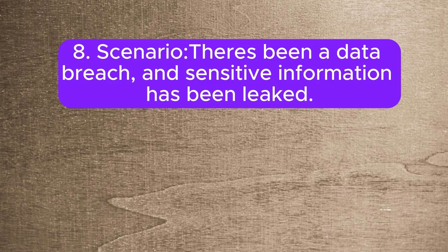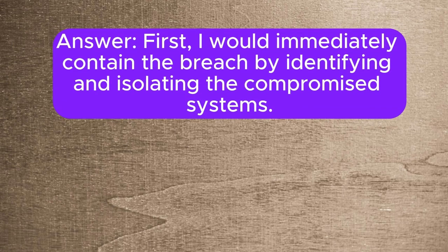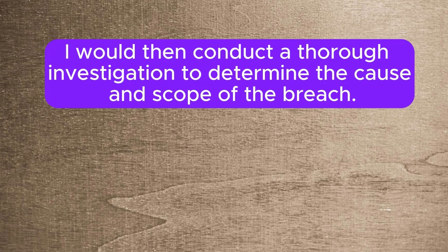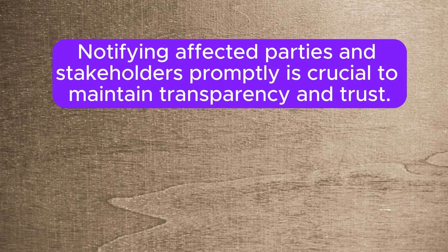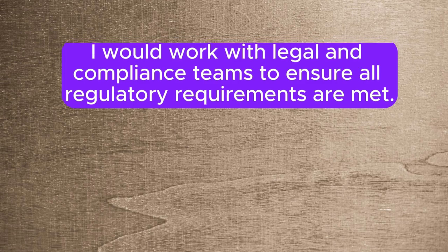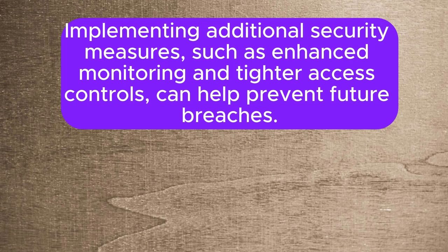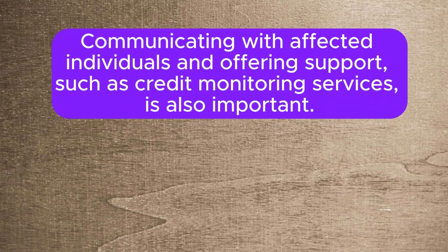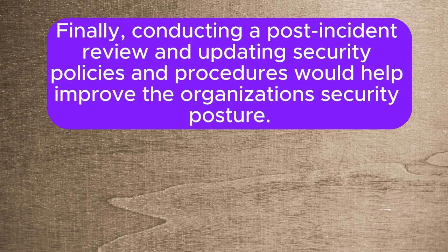Scenario 8: There's been a data breach and sensitive information has been leaked. What steps would you take to manage the situation? First, I would immediately contain the breach by identifying and isolating the compromised systems. I would then conduct a thorough investigation to determine the cause and scope of the breach. Notifying affected parties and stakeholders promptly is crucial to maintain transparency and trust. I would work with legal and compliance teams to ensure all regulatory requirements are met. Implementing additional security measures, such as enhanced monitoring and tighter access controls, can help prevent future breaches. Communicating with affected individuals and offering support, such as credit monitoring services, is also important. Finally, conducting a post-incident review and updating security policies and procedures would help improve the organization's security posture.